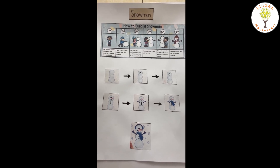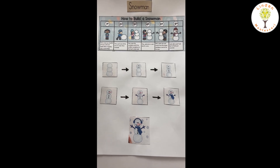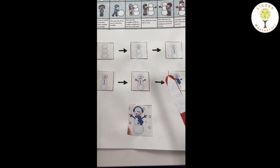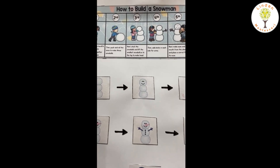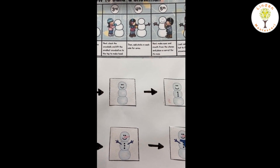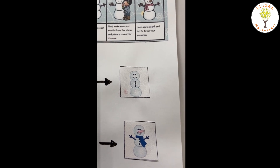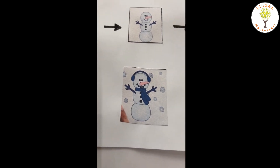Now we will see an example of how to build a snowman. First, we have to roll three snowballs, and then we stack the snowballs. Then we can decorate the face — make a mouth, nose, and stick, and add two sticks for the arms. We can add a scarf, and our snowman is ready!